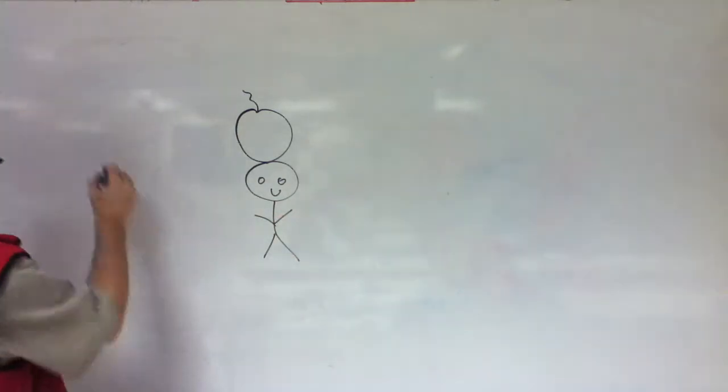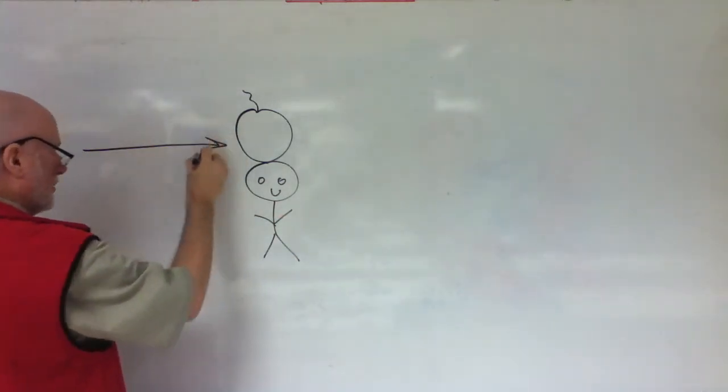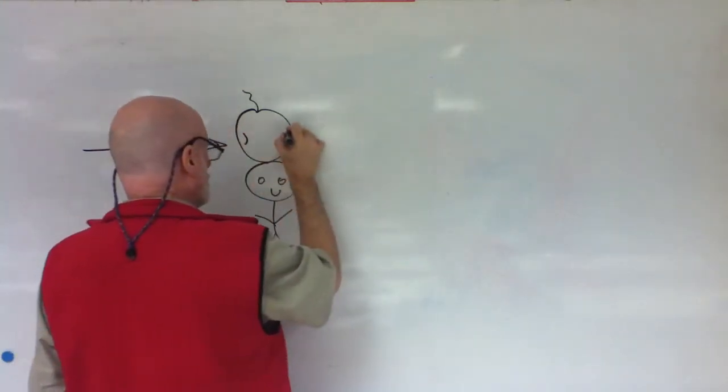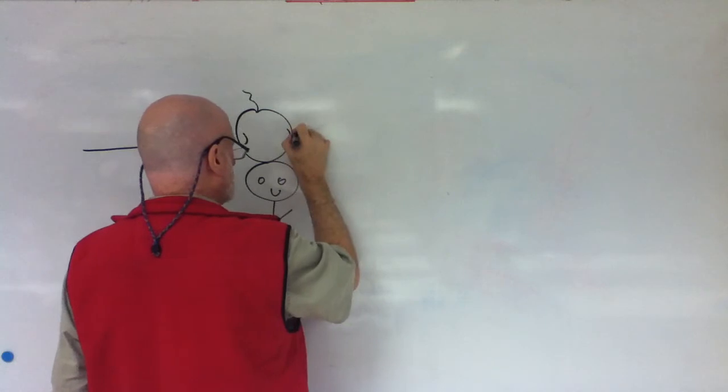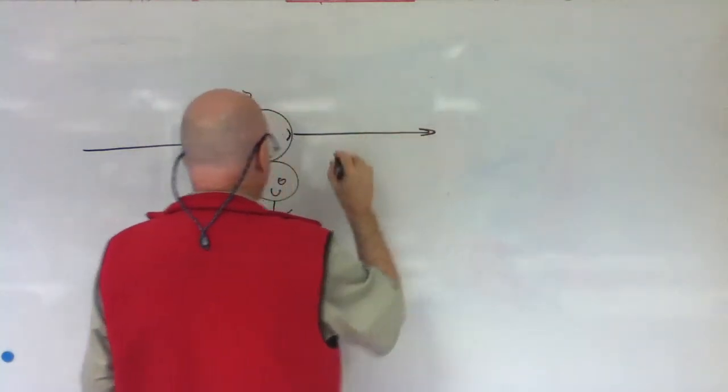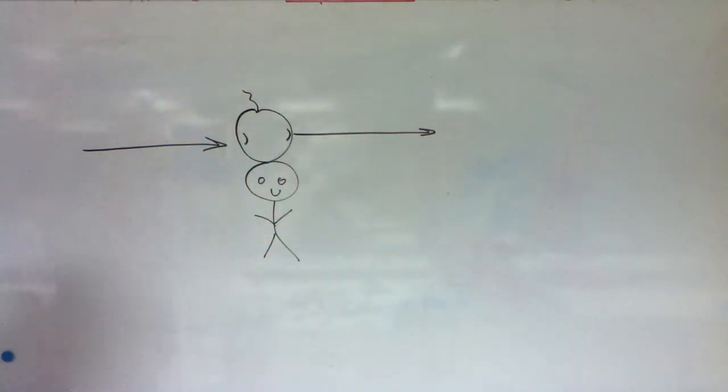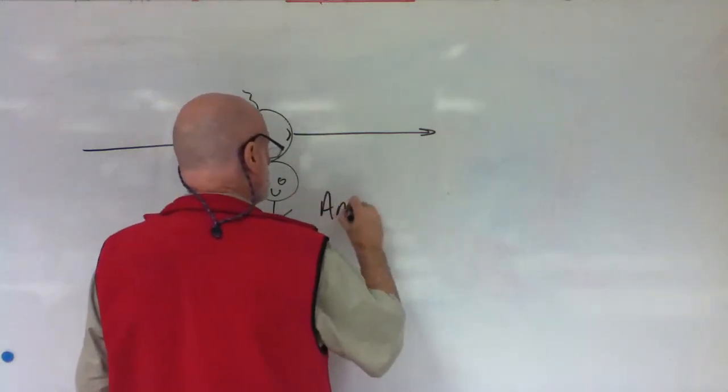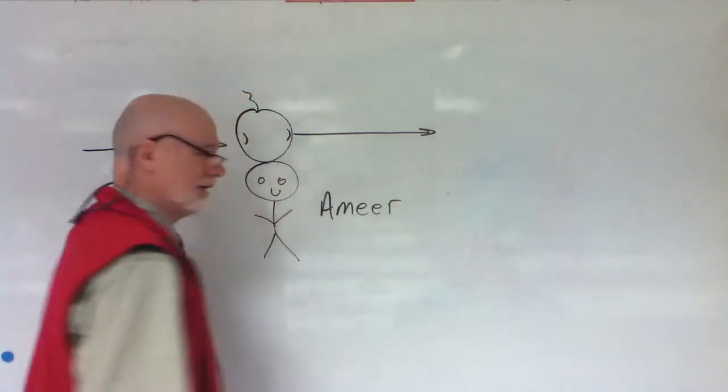Okay, and he shoots this arrow, and it goes in, goes through, comes out, right? Right? Yes? This is, that's Amir. Okay.